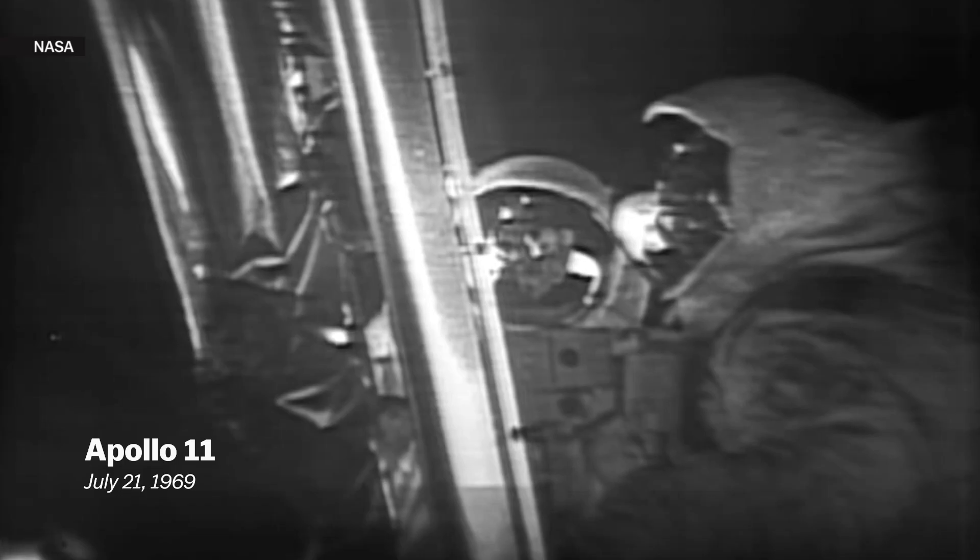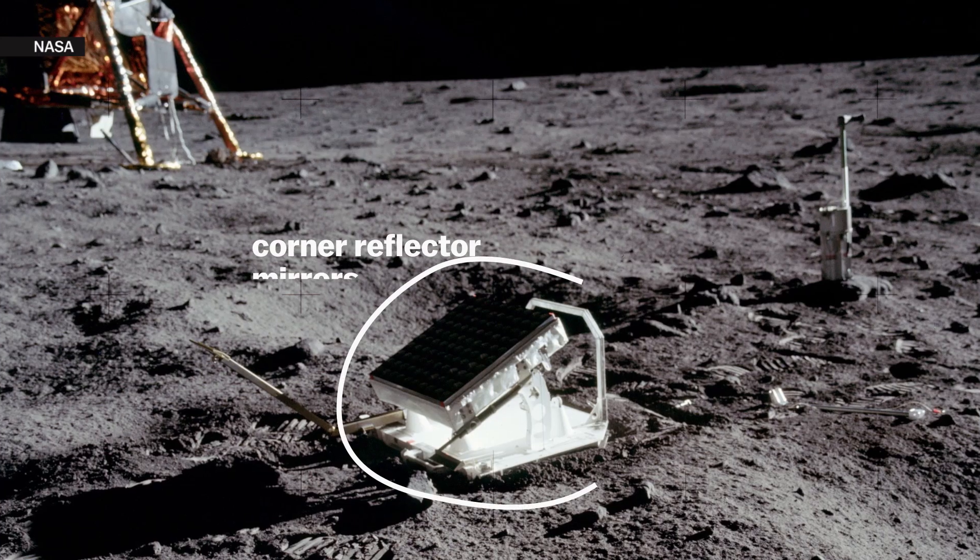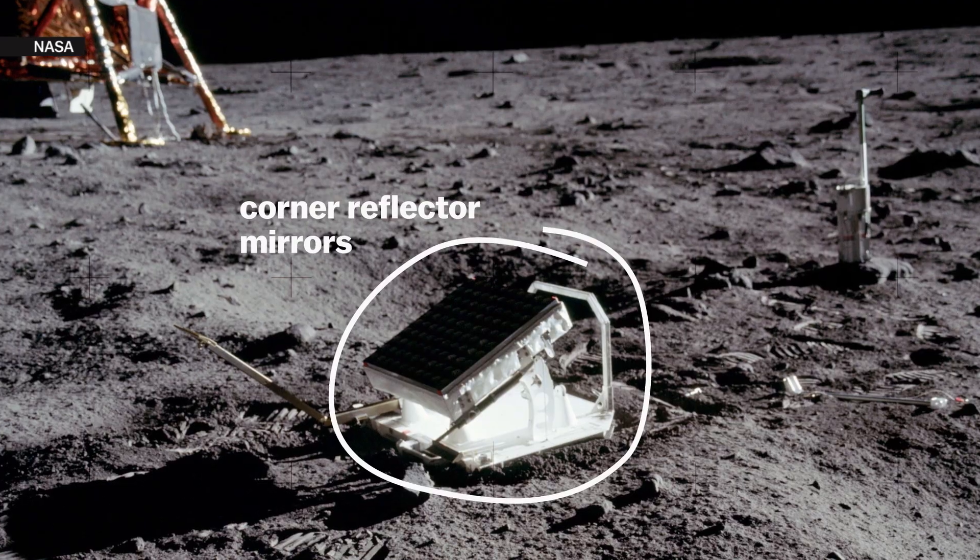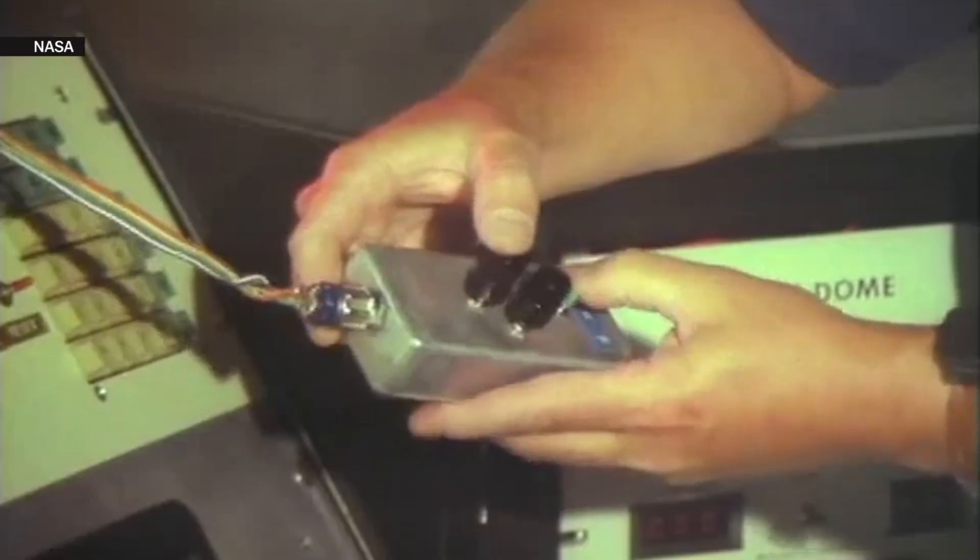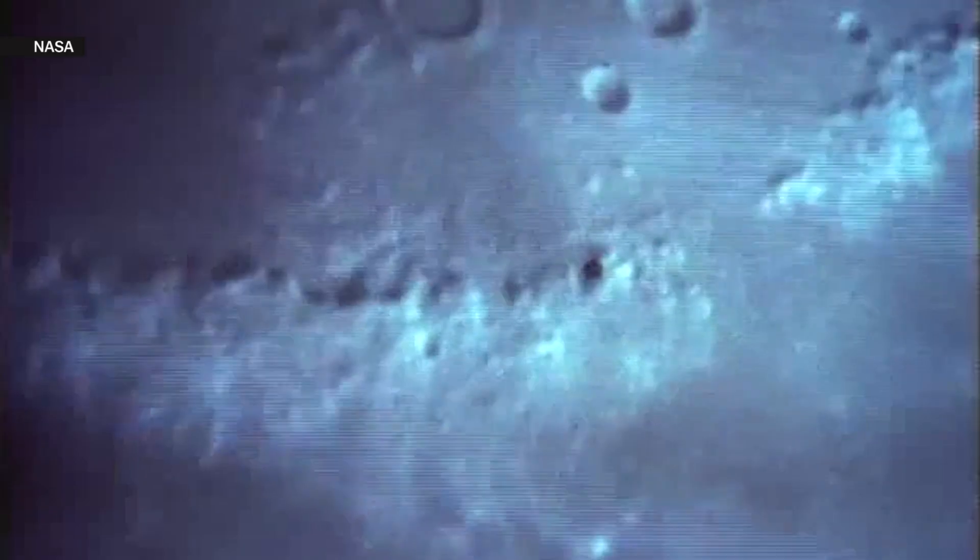We know that because Buzz Aldrin and Neil Armstrong left mirrors on the moon in 1969. Astronomers bounced lasers off those mirrors to measure the moon's distance. And that's how they found out that the moon is moving away from us about one and a half inches every year.